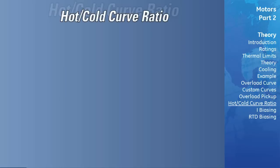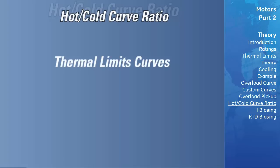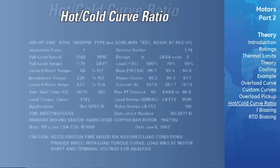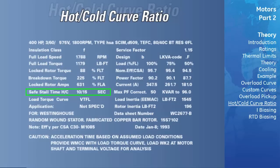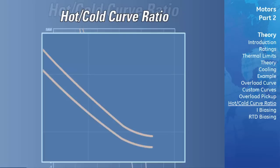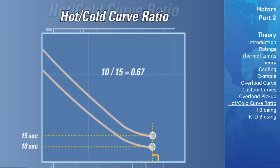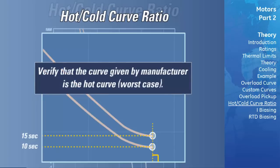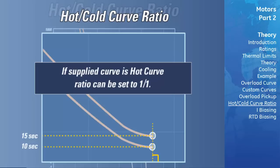The hot-cold curve ratio can be determined from either the thermal limits curves or from the hot and cold safe stall times. If hot and cold safe stall times are used, simply divide the hot safe stall time by the cold safe stall time. If the thermal limits curves are used, run a line perpendicular to the current axis intersecting the hot and cold curves at the stall point, draw a line from each intersection to the time axis, and record the corresponding times — in this case 10 and 15 seconds respectively. The hot-cold ratio equals 10 divided by 15, which equals 0.67. If only one curve is given, verify with the manufacturer that it is the hot curve; if so, the hot-cold ratio can be set to 1 to 1.